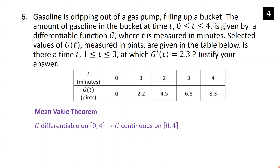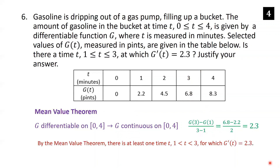Computing G of 3 minus G of 1 over 3 minus 1: from the table, G of 3 is 6.8 and G of 1 is 2.2, and 3 minus 1 is 2, so that equals 2.3. By the Mean Value Theorem, there is at least one time t between 1 and 3 for which G prime of t equals 2.3, and that value of t is strictly between 1 and 3.